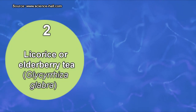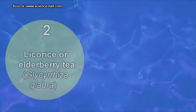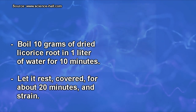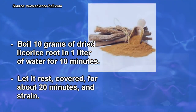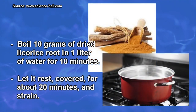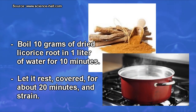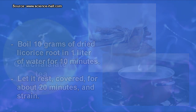Remedy 2: Licorice or elderberry tea. Boil 10 grams of dried licorice root in 1 liter of water for 10 minutes. Let it rest covered for about 20 minutes and strain. This preparation should be taken divided into three doses per day before or after meals.